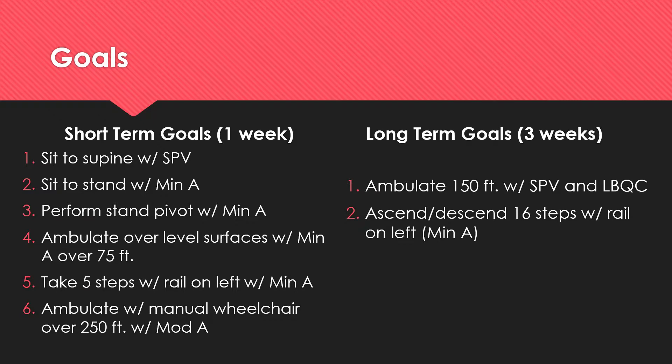The patient's short-term goals were to move from sit to supine with the head of the bed flat at the level of supervision, move from sit to stand with minimal assistance, perform a stand pivot with minimal assistance, ambulate over level surfaces with minimal assistance over 75 feet, take five steps with a rail on the left with minimal assistance, and ambulate with a manual wheelchair over 250 feet with moderate assistance.